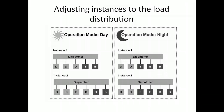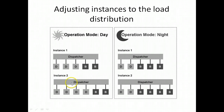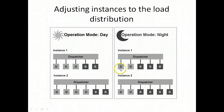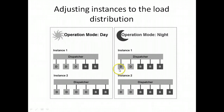The instance is configured with the instance profile, where the number of dialogue and background work processes are defined. In operation mode day, instance one has three dialogue and two background work processes; instance two has four dialogue and two background work processes. In operation mode night, the same instance switches to two dialogue and three background work processes. Two dialogue work processes is the compulsory minimum — you cannot reduce below two dialogue or two background work processes.